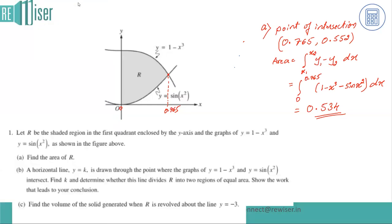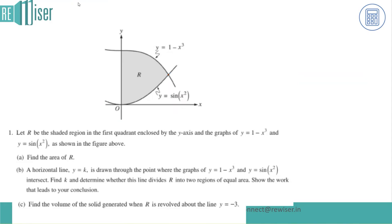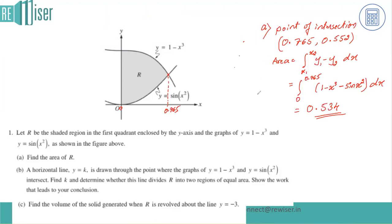The mark distribution for Part A: one mark for finding the point of intersection, one mark for showing the integral statement, and one mark for the final answer — three marks total.